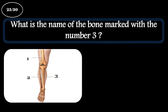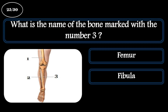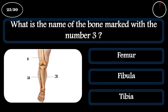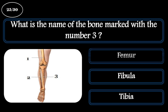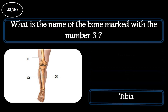Question 25. What is the name of the bone marked with number 3? The correct answer is the tibia.